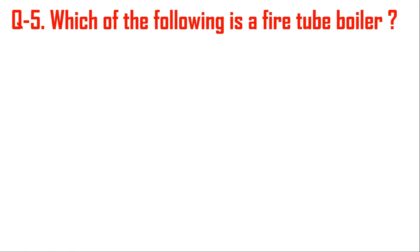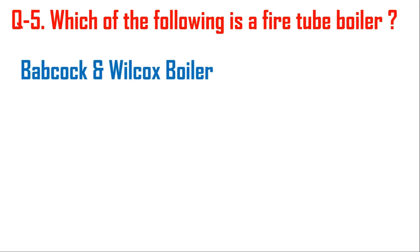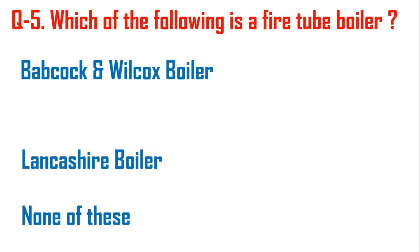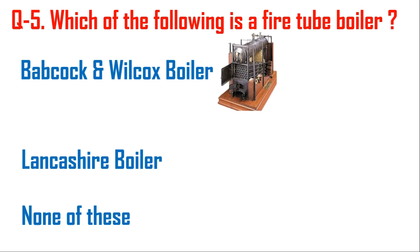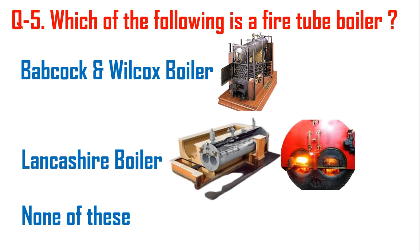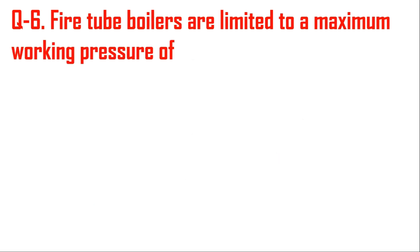Question number five: which of the following is a fire tube boiler — Babcock and Wilcox boiler or Lancashire boiler? Babcock and Wilcox is a water tube boiler, while Lancashire boiler is a fire tube boiler, so the correct answer is Lancashire boiler. Question number six: fire tube boilers are limited to a maximum working pressure of 1.7 mega-newton per meter square.